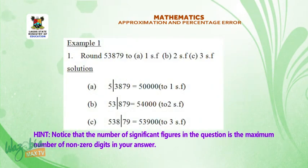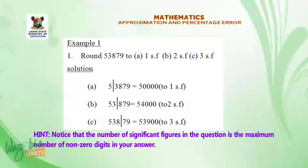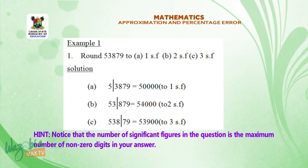Example 1. Round 53879 to a, 1 significant figure, b, 2 significant figures, c, 3 significant figures. Solution a, 53879 is equal to 50000 to 1 significant figure, b, 53879 is equal to 54000 to 2 significant figures, c, 53879 is equal to 53900 to 3 significant figures. Hint! Notice that the number of significant figures in the question is the maximum number of non-zero digits in your answer.